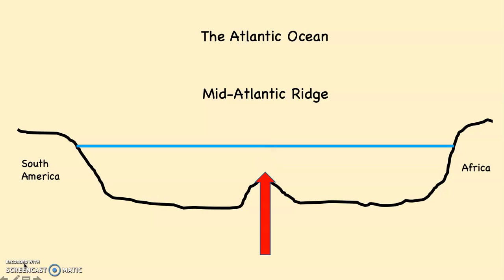As more research was done, one of the things found was that the Mid-Atlantic Ridge is entirely volcanic — meaning it's erupting all the time. We didn't know it was erupting because it's below sea level. And remember, every time a volcano erupts, new lava comes out, which when it solidifies creates brand new rock that was not there the day before.